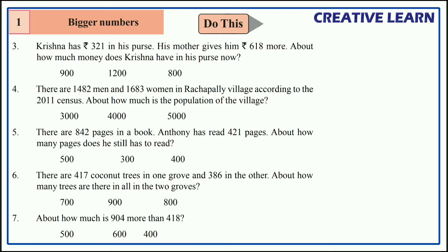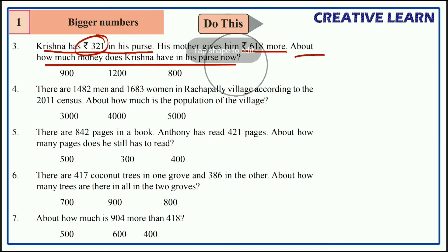First question: Krishna has 321 rupees in his purse. His mother gives him 618 rupees more. The question is: how much money does Krishna have in his purse now? Krishna already has 321 rupees and his mother gave 618 rupees, so we have to find the total amount of money.